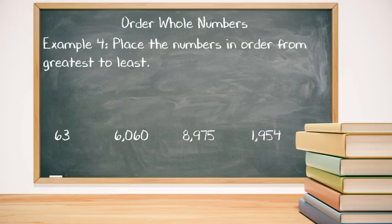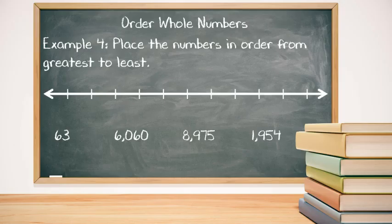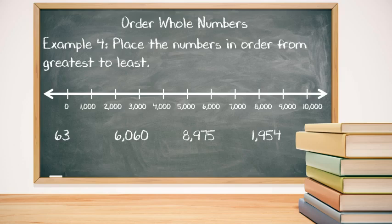In example four, we now want to place our numbers in order from greatest to least. Our numbers are in different thousands places, so we would want to put them in order according to the thousands place, since that's the greatest place value.